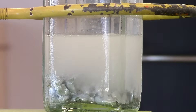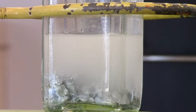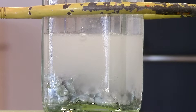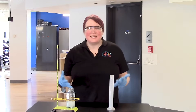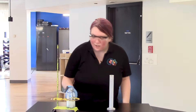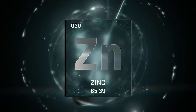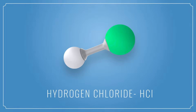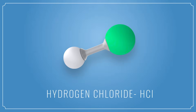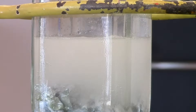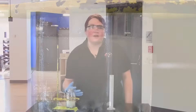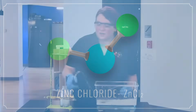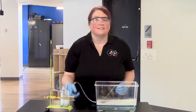All right, so what's going on? Let's observe what's happening. I see bubbles — this lets me know that a chemical reaction is taking place. What's happening is the zinc (Zn) is reacting with my hydrochloric acid (HCl) to form some new substances. The bubbles are hydrogen gas (H2), and it's also making another compound called zinc chloride (ZnCl2).